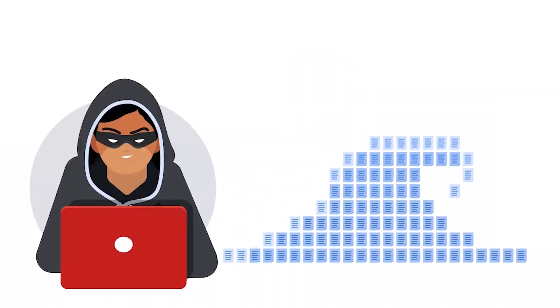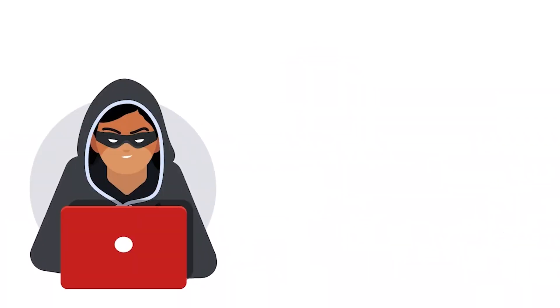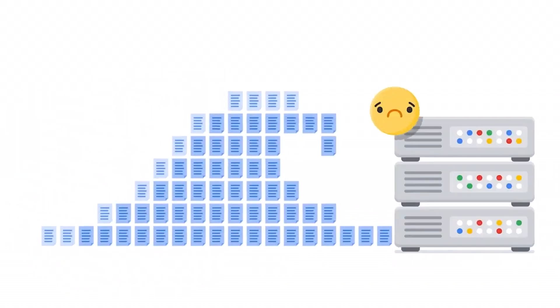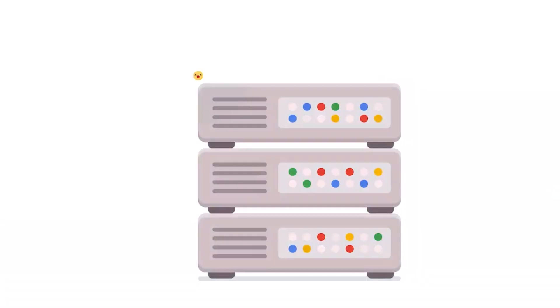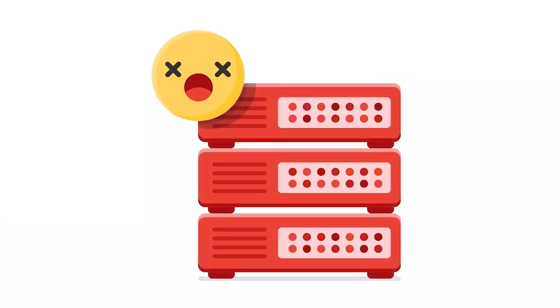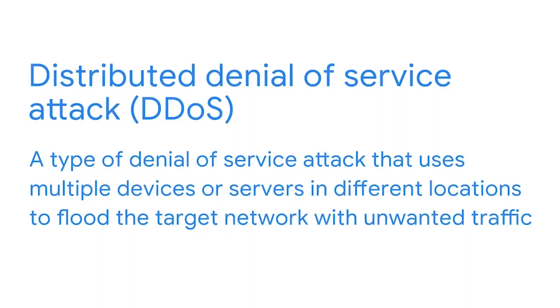The goal of the attack is to send so much information to a network device that it crashes or is unable to respond to legitimate users. This means the organization won't be able to conduct their normal business operations, which can cost them money and time. A distributed denial of service attack, or DDoS, is a kind of DOS attack that uses multiple devices or servers in different locations to flood the target network with unwanted traffic.